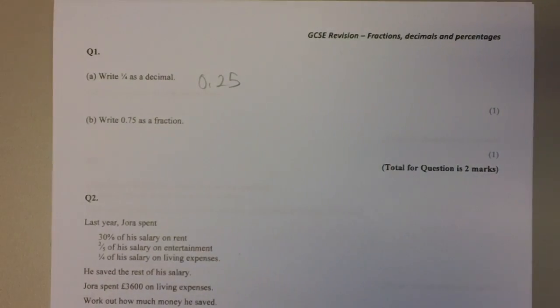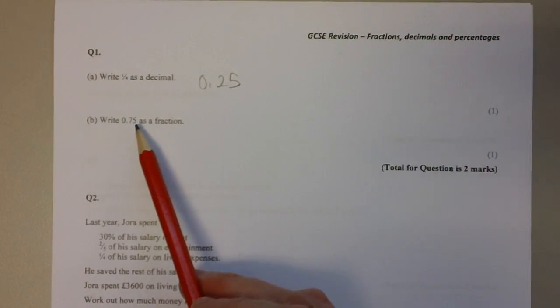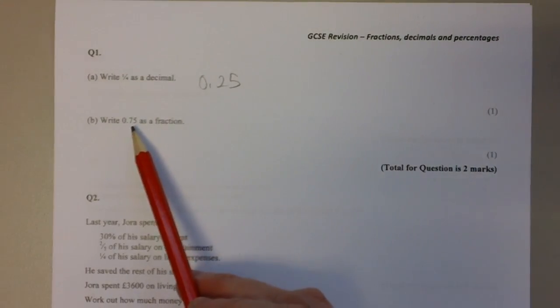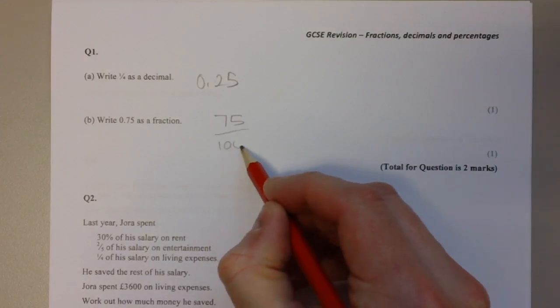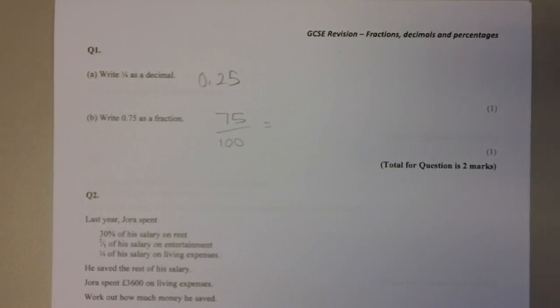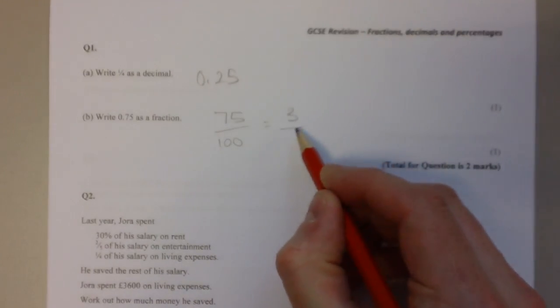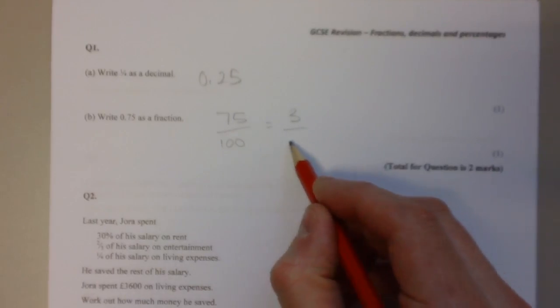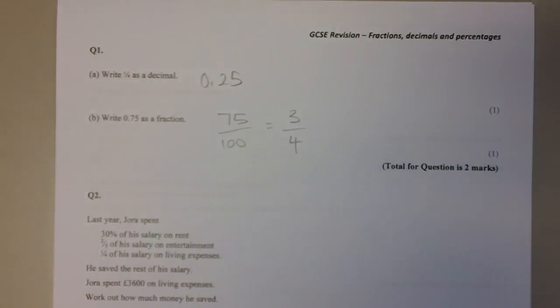Part B: write 0.75 as a fraction. The seven is in the tenths column, the five is in the one hundredths column. We've got 75 one hundredths, which is written like that. That fraction will simplify - both top and bottom, we'll divide by 25. There are three 25s in there and there are four 25s in there.